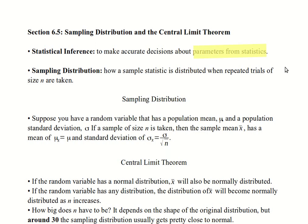So I've got a sample, I want to know how well that represents the population so that I can make decisions from the statistics about the parameter. So a sampling distribution is how a sample statistic is distributed when repeated trials of size n are taken.